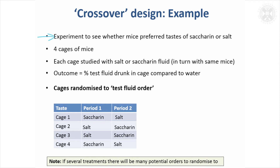We're going to study mice by the cage rather than as individuals, and just measure how much of each fluid they drank in each of four cages. Rather than have two cages on one fluid and two cages on the other fluid, it's possible to study each cage on both fluids. You give one fluid to the first cage for a bit and then switch over to the other fluid. By doing that, if there was a particular effect or correlation between the animals in, say, cage one, giving them both interventions takes that out.